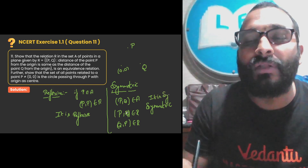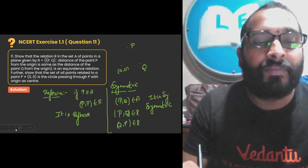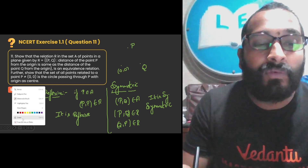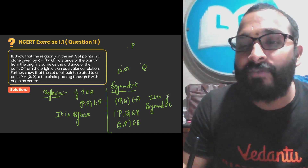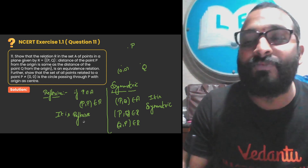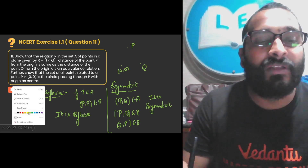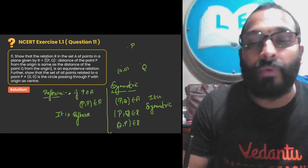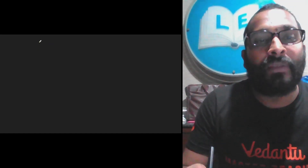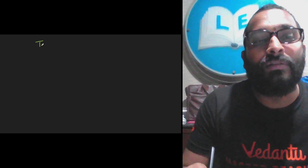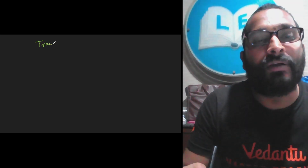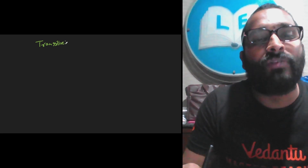Now if we have understood this, the next part — checking for transitive — is very simple and easy. Let us quickly see. For transitive, instead of taking two points, let us take three points P, Q, and R.